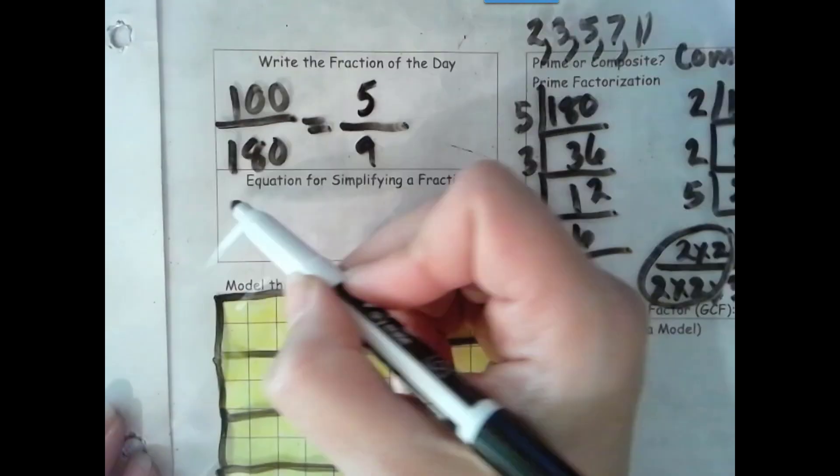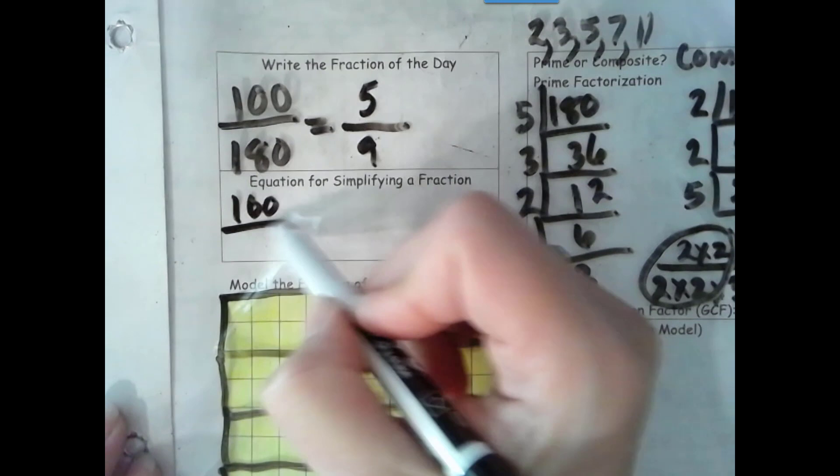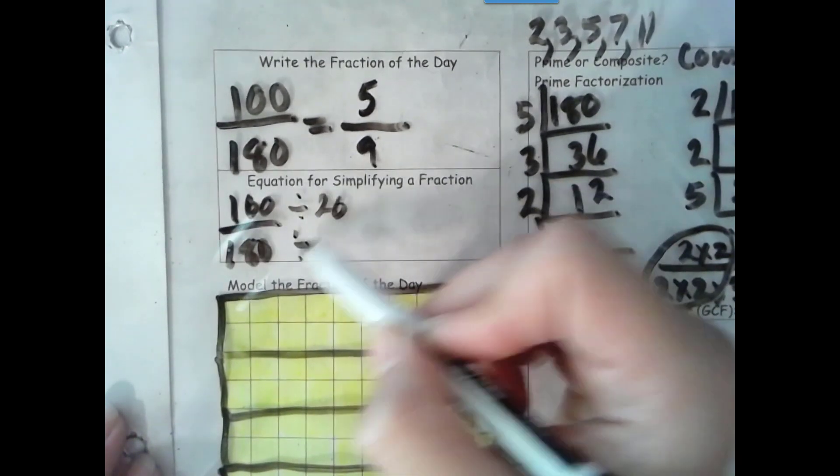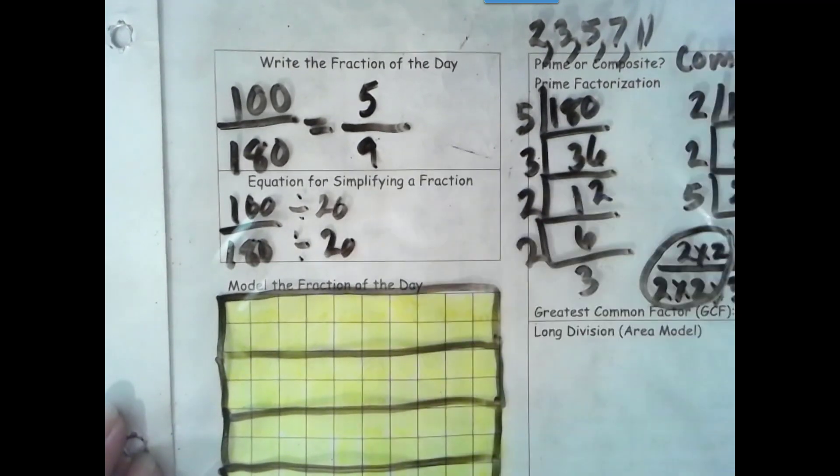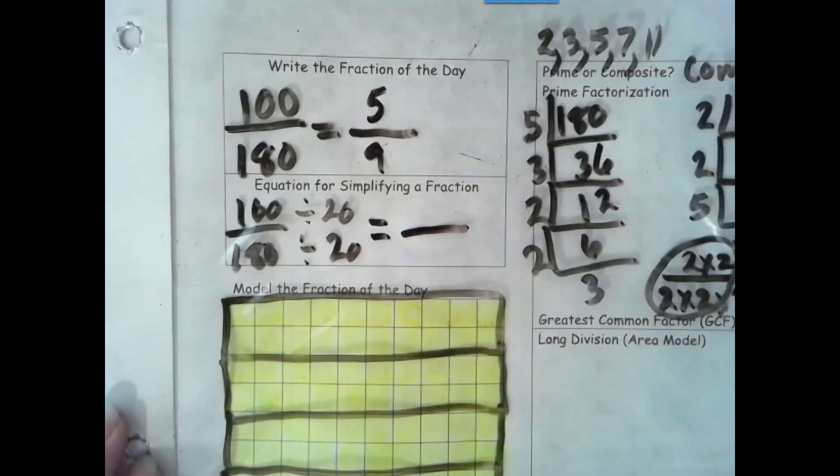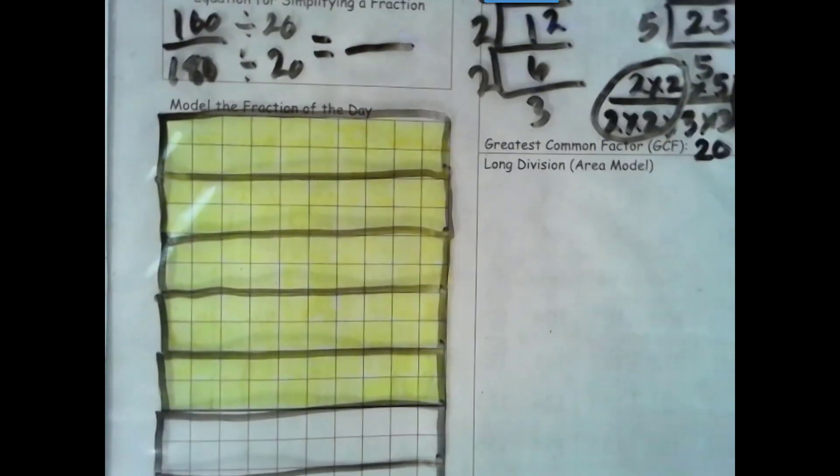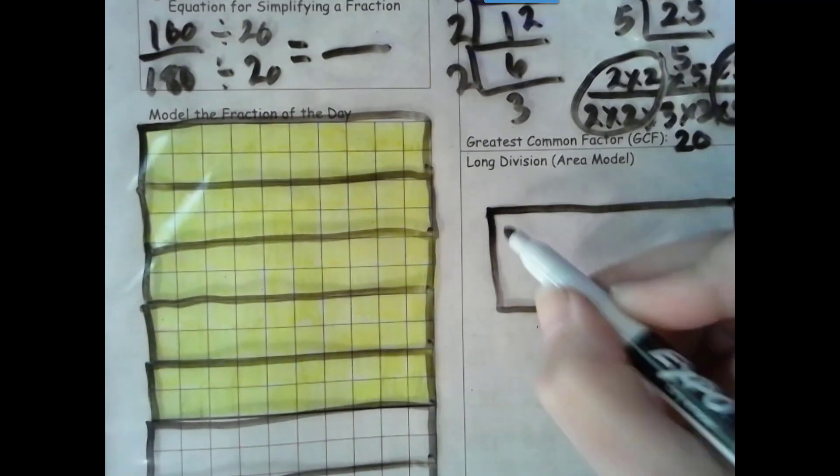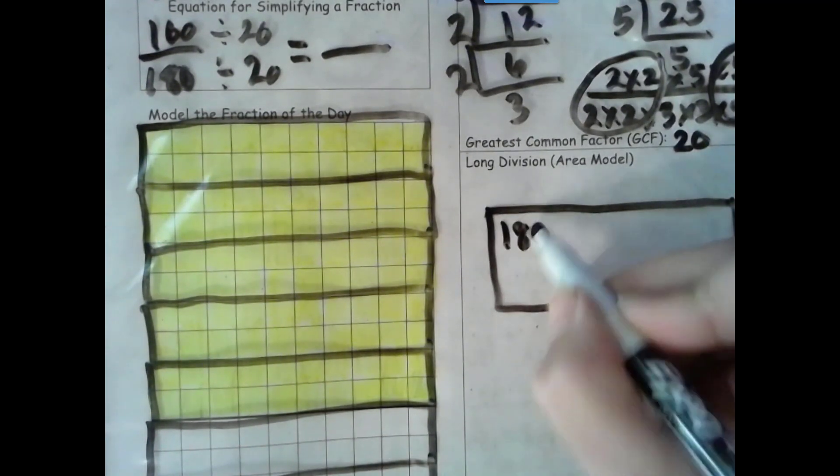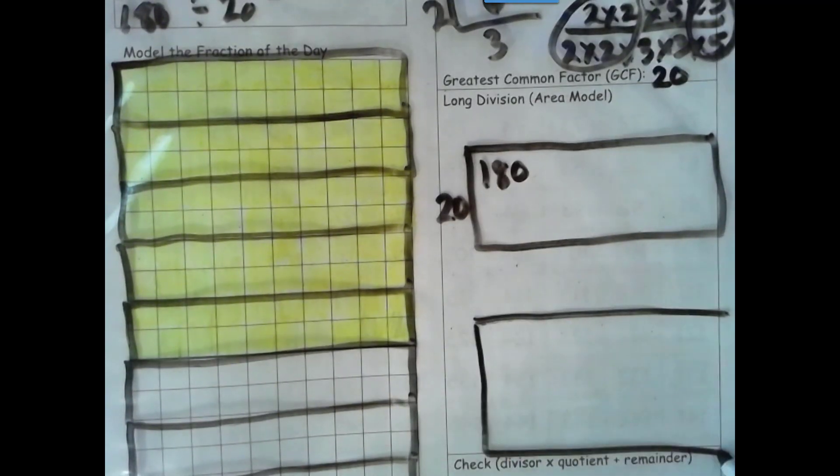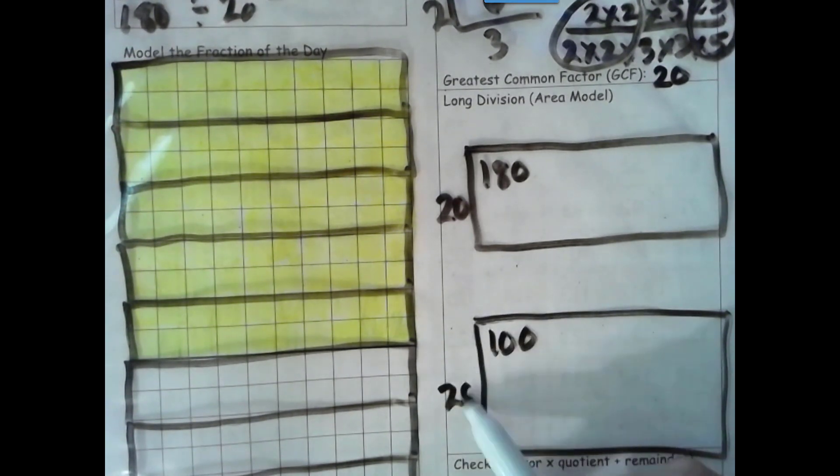Okay, so now that we've done our division with our model, let's go ahead and prove it with our algorithm. These always have to be the same, because we didn't make different size groups. And they always have to be a common factor. So we divided 180. This side of the rectangle is 20. And then we have 100. And this side of the rectangle is 20.